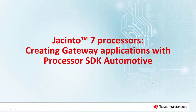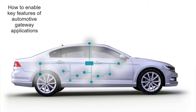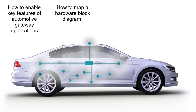Hello and welcome to the session on Jacinto 7 software training. In this session, we will learn how to build gateway applications on the Jacinto 7 platform using the Processor SDK automotive release. We will look at some of the key features required for gateway applications and how they are enabled using the Processor SDK. We will start with the typical hardware block diagram for a gateway system and its intended mapping to the Jacinto 7 platform.